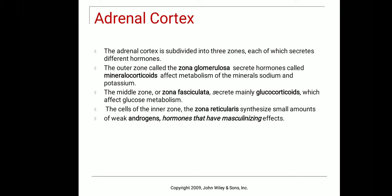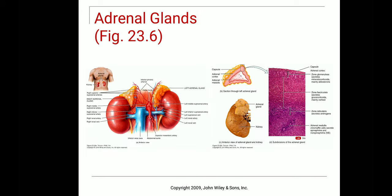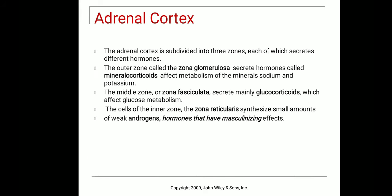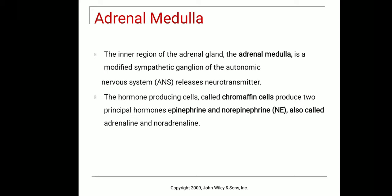Zona fasciculata produces glucocorticoids, which help in glucose metabolism and the absorption of glucose into the body. Zona reticularis produces a weak androgen called DHEA — dihydroepiandrosterone — which is similar to testosterone and has masculinizing effects, helping in the development of secondary sexual characters.